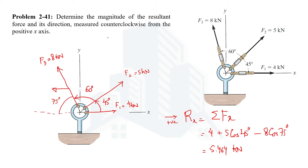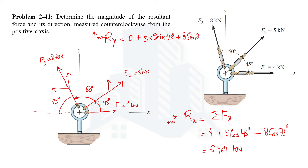Now let's calculate the y-component of the resultant force, taking upward forces as positive. F1 has no vertical component since it is directed along the x-axis, so it contributes zero. The y-component of F2 is 5 sin 45°, which is upward, hence positive. Similarly, F3's y-component is upward and equals 8 sin 75°. Summing these, the resultant y-component Ry = 11.263 kilonewtons.